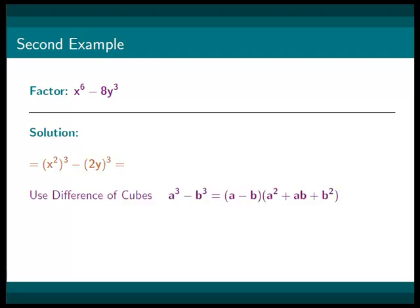Therefore, we can use the difference of cubes formula, which is a cubed minus b cubed equals a minus b times a squared plus ab plus b squared. After substituting into the formula, we end up with x squared minus 2y times x to the fourth plus x squared times 2y plus 2y squared.